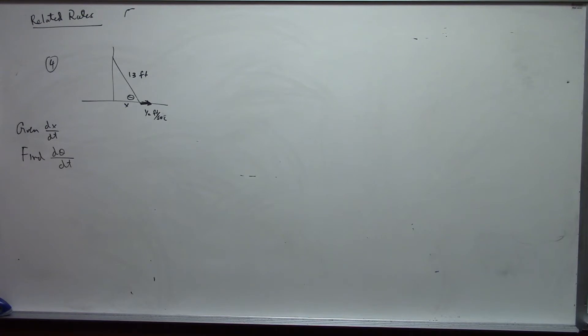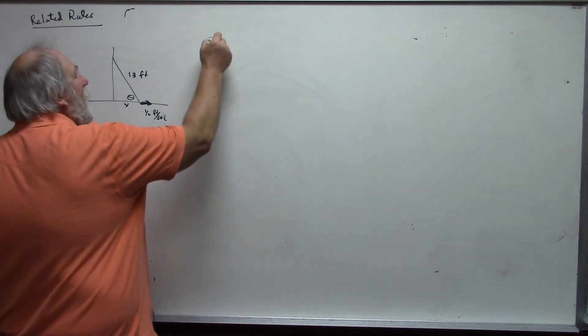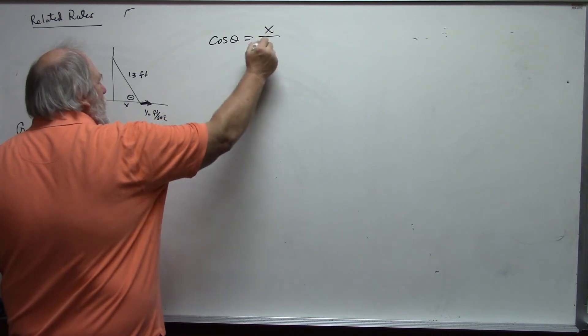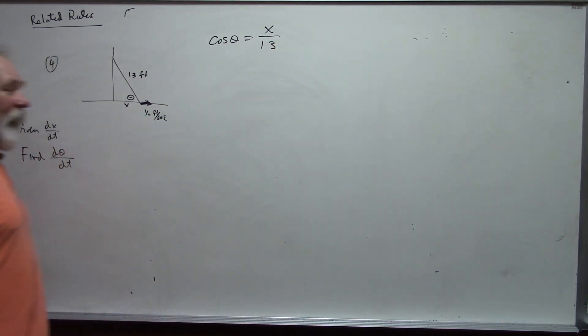Okay? Now, I need an equation that relates these important variables, x and theta, with the information. In this particular case, we can use the fact that cosine theta is equal to x over 13. And by doing this, I do not have any unimportant variables, any variables that I need to get rid of. So, I can skip that part and just go ahead and take the derivative.